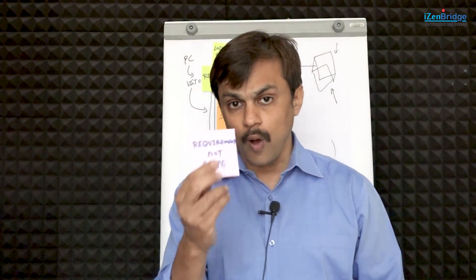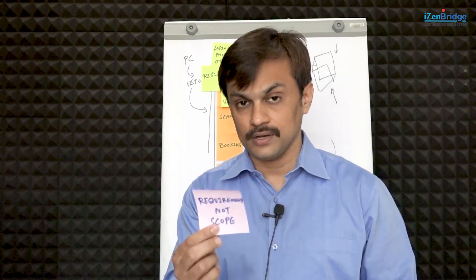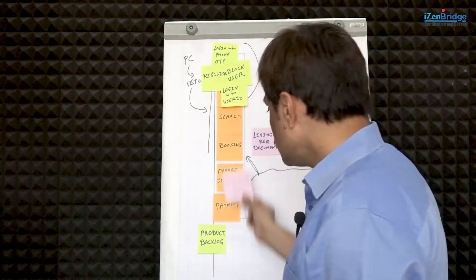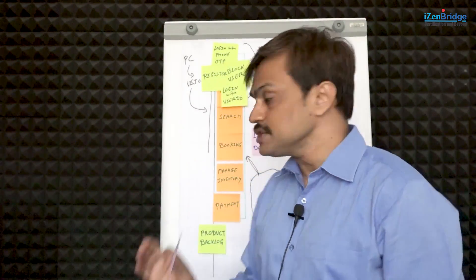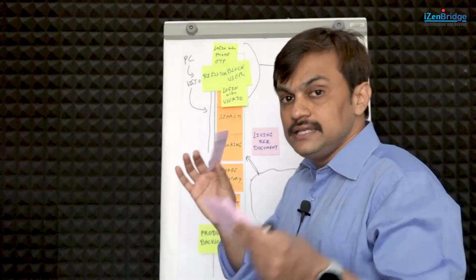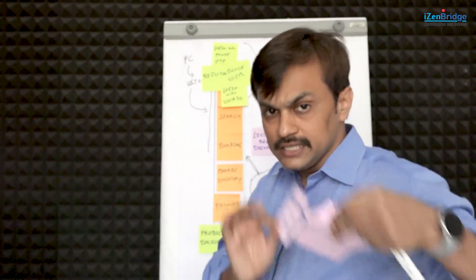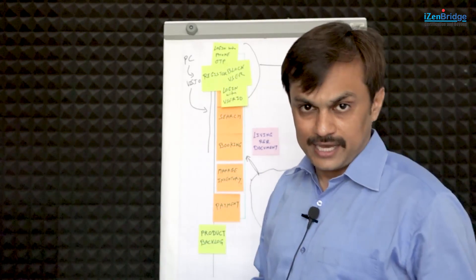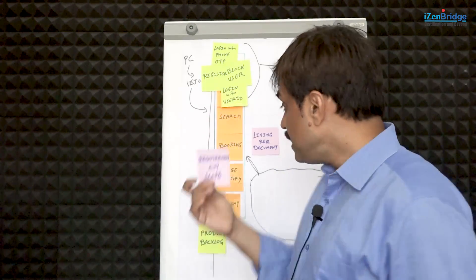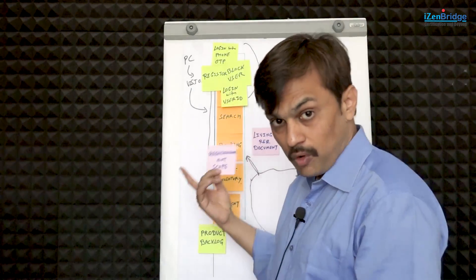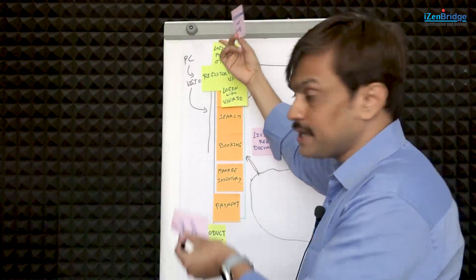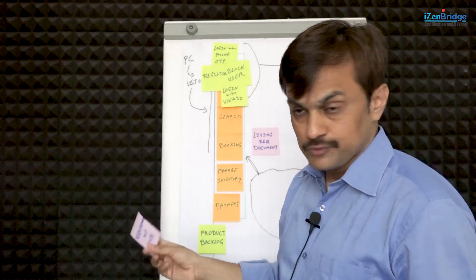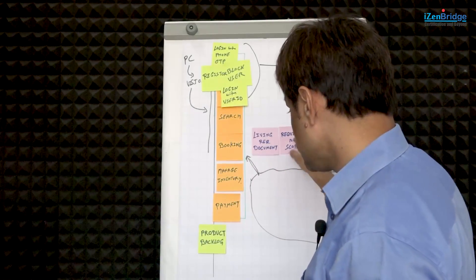It contains requirements, not scope — and for a project manager this is very important. The product backlog should be in the language of your end users. It is not in the language of implementation, not in the language of deliverables, not a solutioning language. It's a need language, a problem language, a benefit language. It contains requirements, and these requirements might be big or small. High-priority items expected to get done soon will become small; others might remain big.